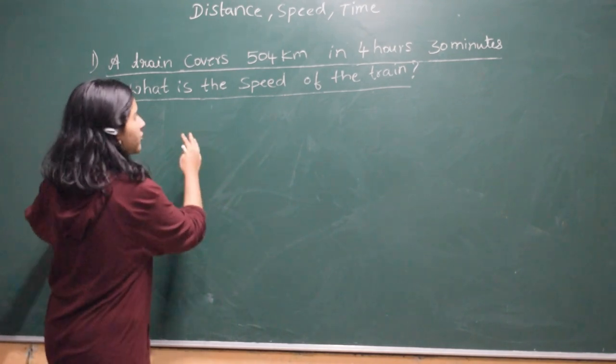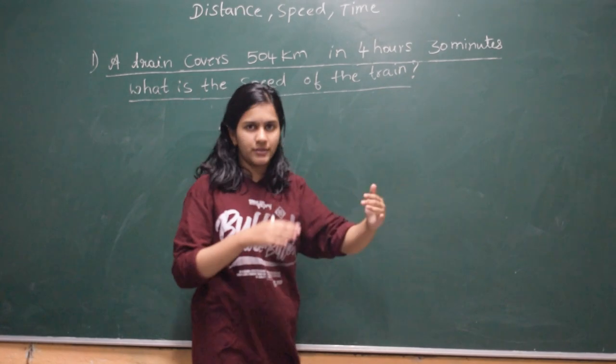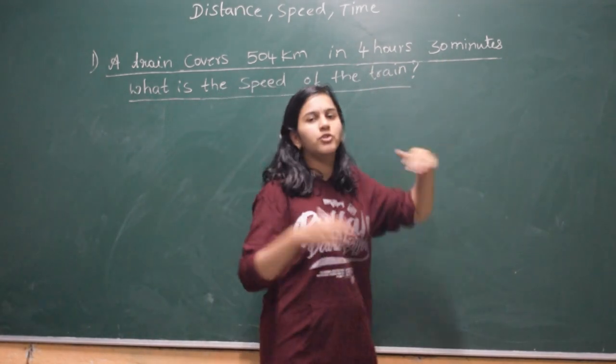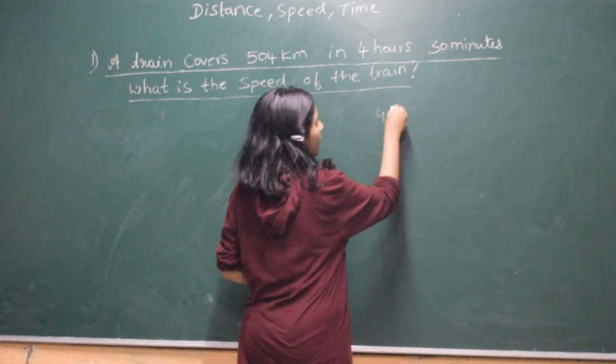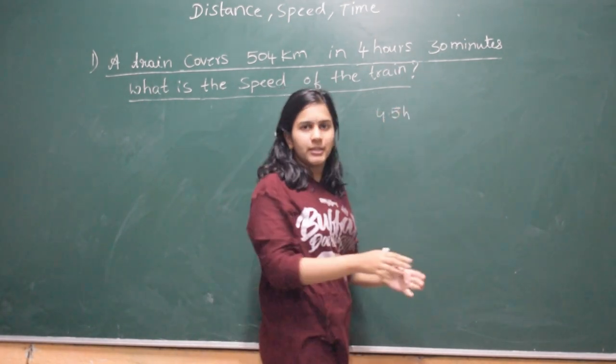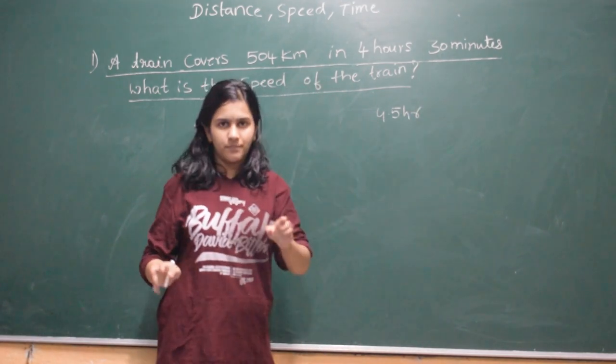Before we solve this question, we have to convert 4 hours 30 minutes into hours. 4 hours is already in hours, so we convert 30 minutes into hours. We will get 4.5 hours, because 30 minutes is nothing but half hour. So 4 hours 30 minutes means 4.5 hours.